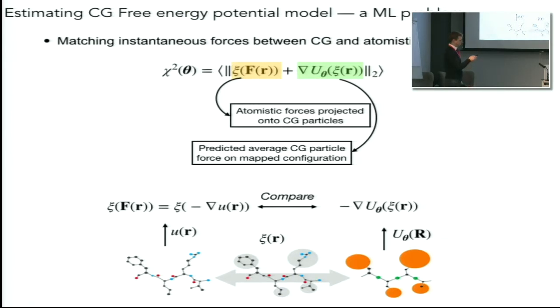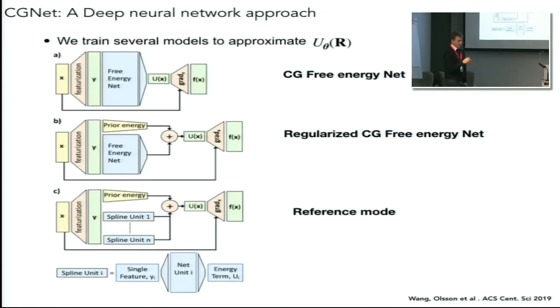We came up with three different models to test this approach. One is a simple model where we simply have a featurization of the molecule into invariant features, rotationally and translation invariant features, and then we pass it through a multi-layer perceptron with an increasing number of layers. Then we have a regularized version of this network which turns out to be the most efficient one, the best working one, where we basically penalize going outside the domain of the training data. Finally we have a reference model which doesn't allow for the modeling of multi-body interactions where we simply model each of the features individually.